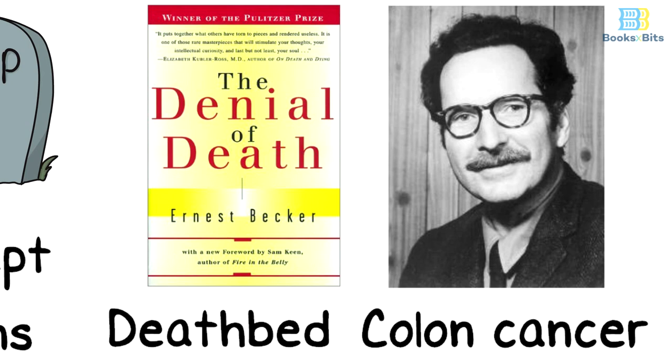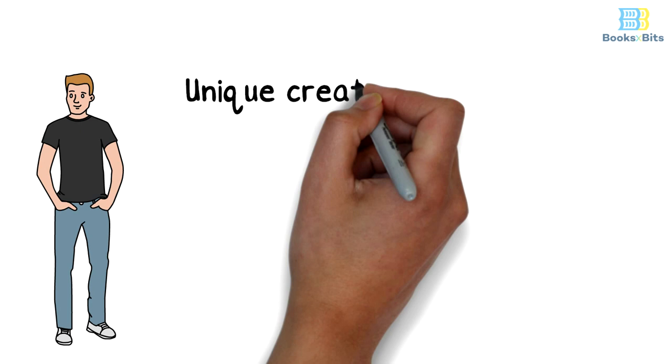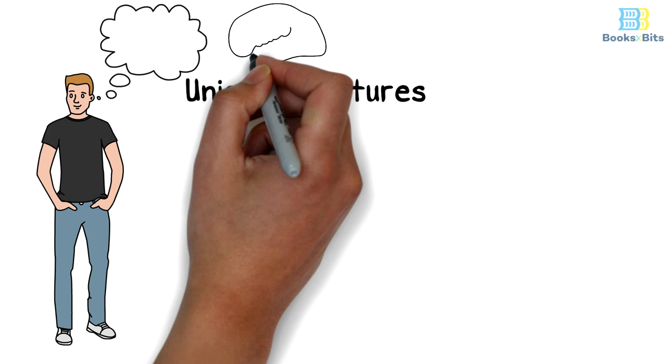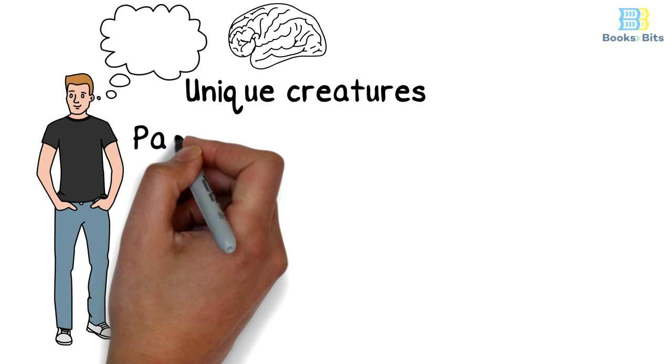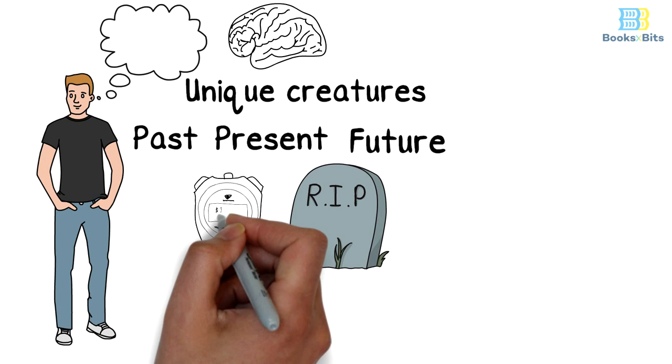First, human beings are unique creatures that are different from other living creatures because of their ability to envision, imagine, and think. A person can envision themselves in hypothetical scenarios in the past, present, and future. This leads to the realization of certain death at a moment's notice.